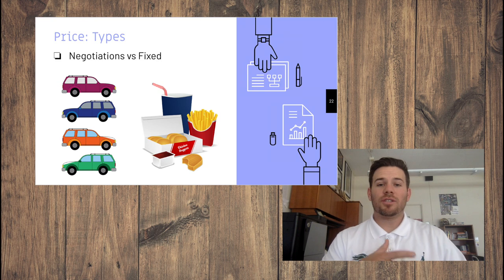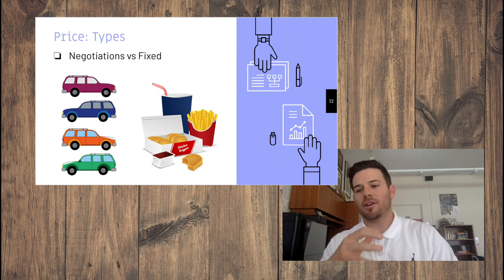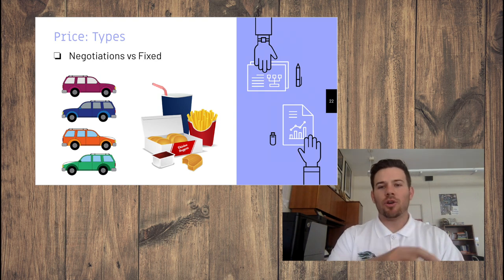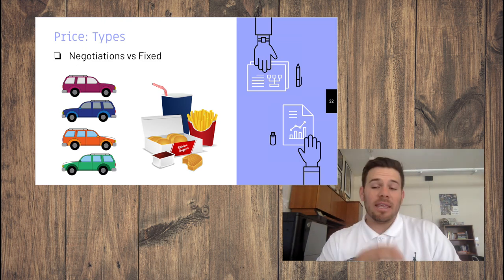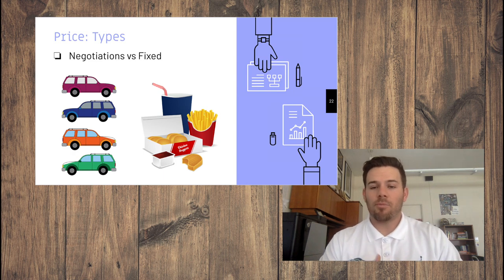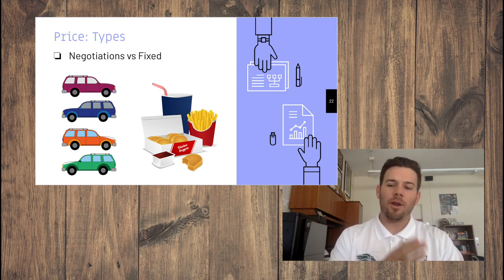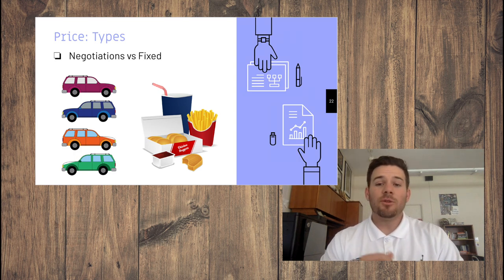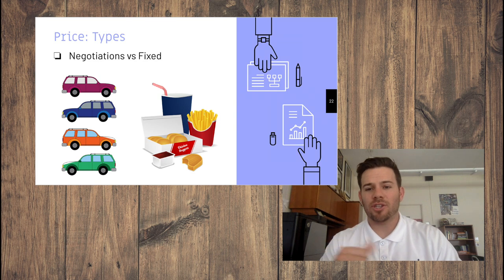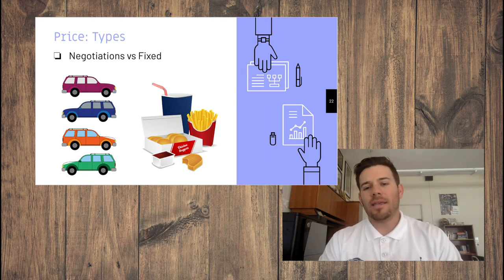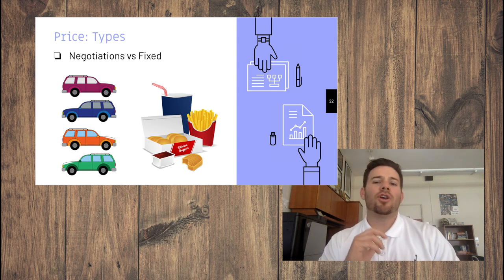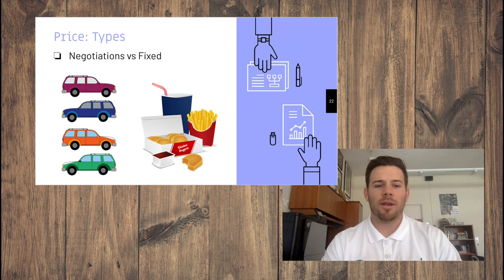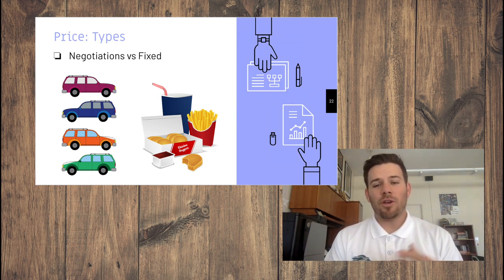There are a couple of pricing types. Negotiation vs. fixed: when buying a car you can negotiate price, trade-ins, and terms. Some people love negotiating; others hate it and just want one fixed price. At McDonald's or Burger King you can't negotiate — it's a fixed price, and if you want that meal you pay that amount.